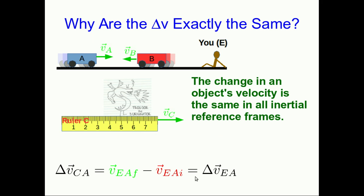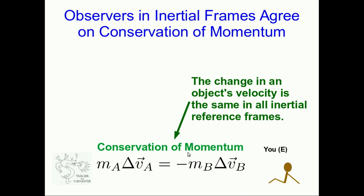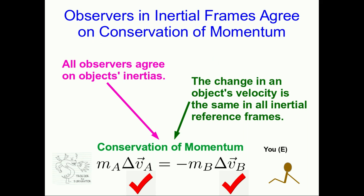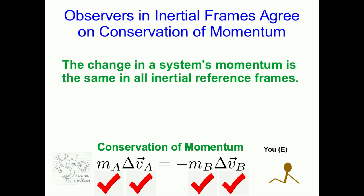Now we have our answer to part of our original question. Because you and Trogdor agree on the delta V's, and you also most definitely agree on the inertias — every observer agrees on those — that means you agree on the change in the system's momentum. In fact, the change in a system's momentum is the same according to observers in all inertial reference frames. Which means that if one observer sees an object conserving its momentum, all other observers in inertial reference frames will agree.